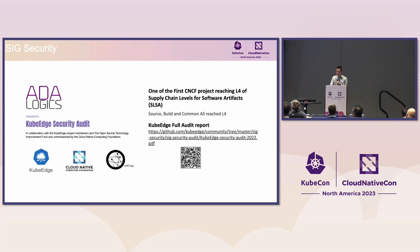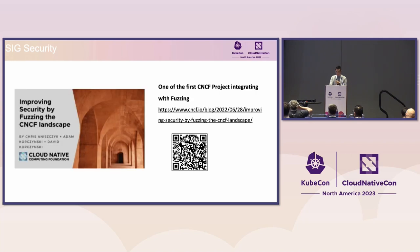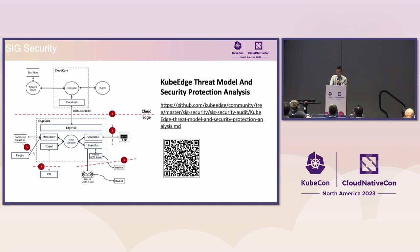For SIG Security, we are one of the first CNCF projects to reach SLSA Level 4 supply chain security. The artifacts security link and QR code for our full audit report are available — it was assessed by a third party. We are also one of the first CNCF projects to integrate fuzzing testing. We have also done threat modeling and security protection analysis.